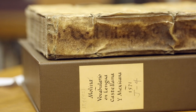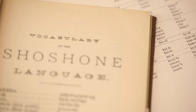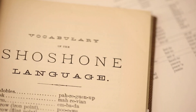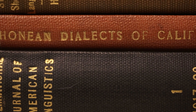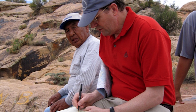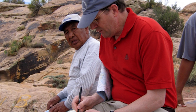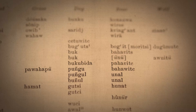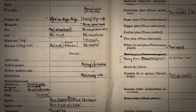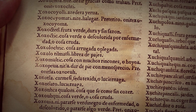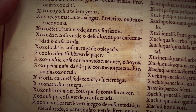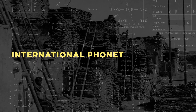The words came from missionary accounts, 19th century grammars and dictionaries, all the way up to contemporary recordings of languages that are still actively spoken. All of the original sources had different ways of writing those languages, so how do you compare them rigorously? You need to render them all into a single format — the International Phonetic Alphabet.